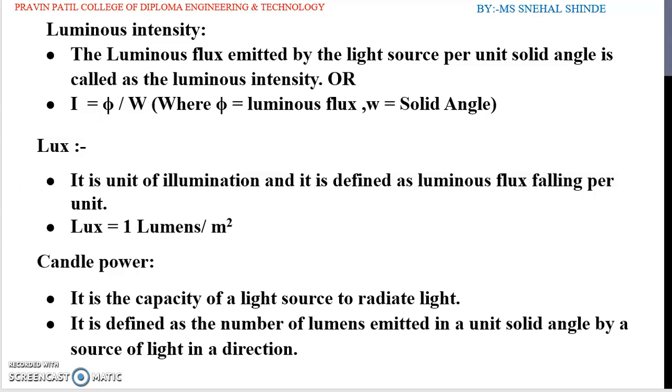Next definition is the candle power. Candle power of the source is defined as the number of lumens emitted by that source per unit solid angle in a given direction. The term candle power is used interchangeably with luminous intensity I. It is the capacity of the light source to radiate light and it is defined as number of lumens emitted in a unit solid angle by a source of light in a direction.